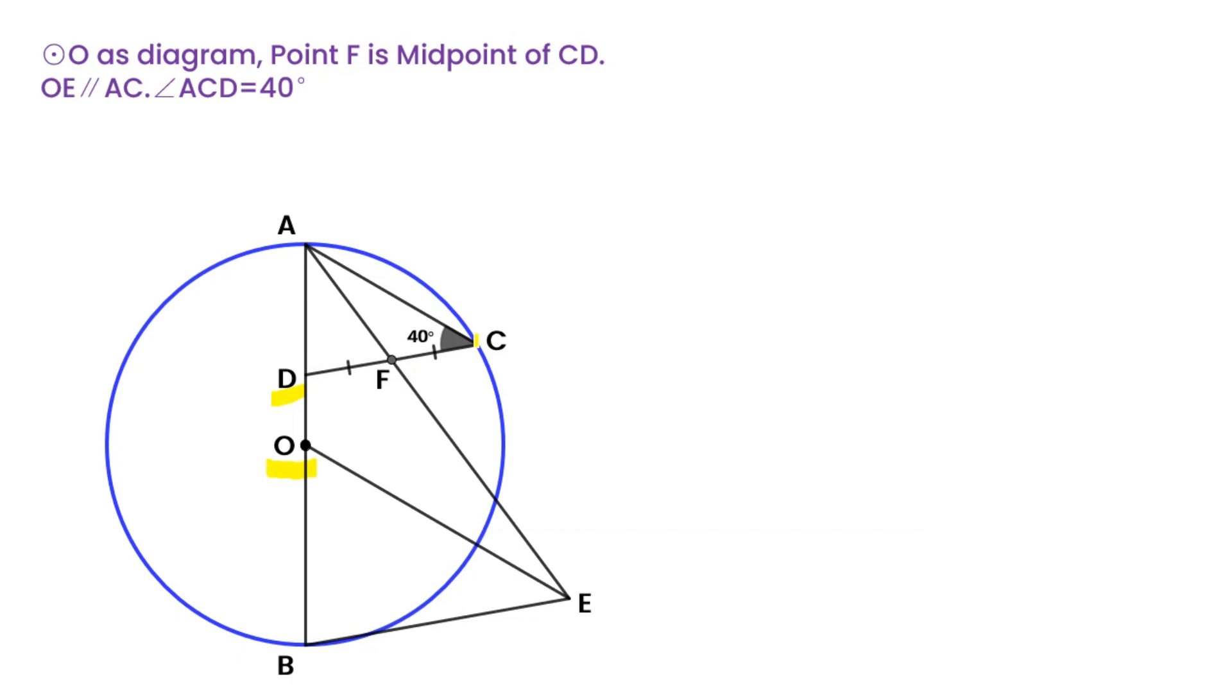Angle ADC inscribed in circle equals 40 degrees. Point F is the midpoint of CD. Segment OE is parallel to AC and intersects AF at point E.